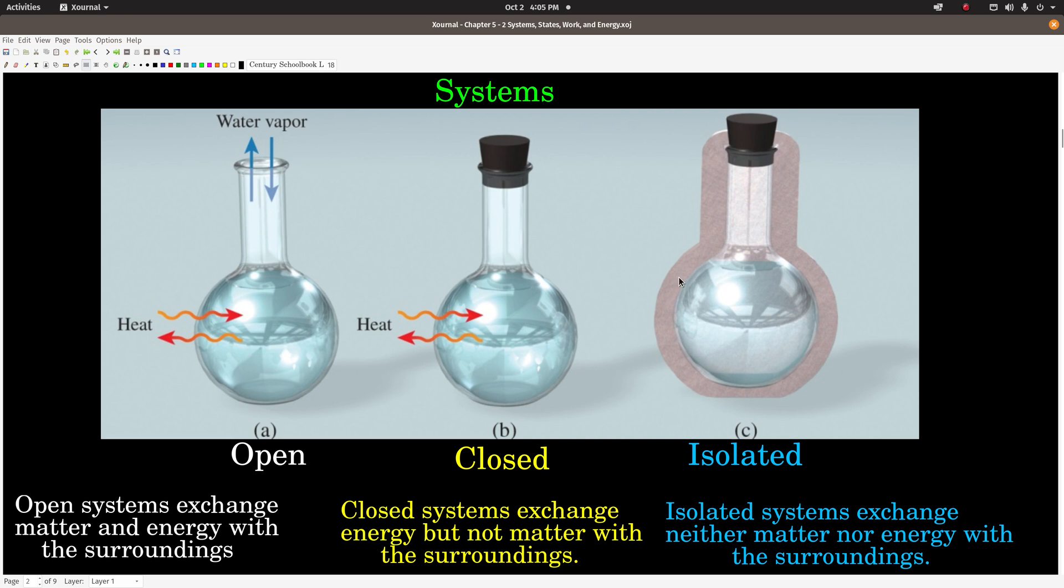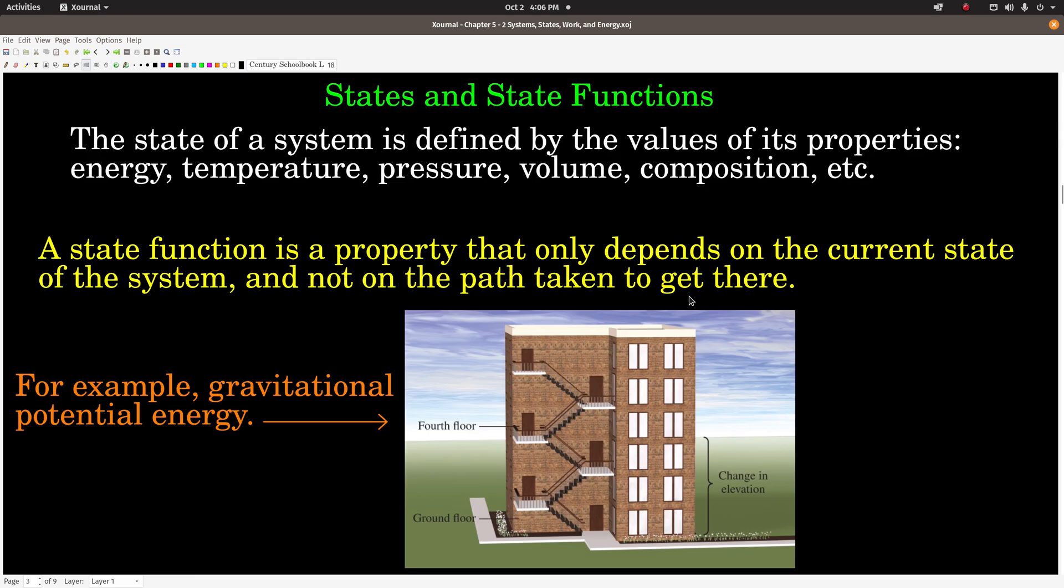All right, states and state functions. The state of a system is defined by the values of its properties of that system - things like energy, temperature, pressure, volume, what it's made of, how much, all that good stuff. A state function is a property that only depends upon the current state of the system and not how the system got there. State functions are nice. They make our lives so much easier when we're trying to figure stuff out.